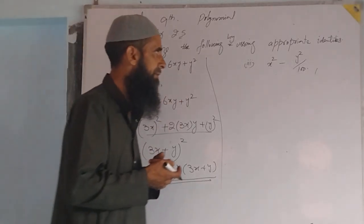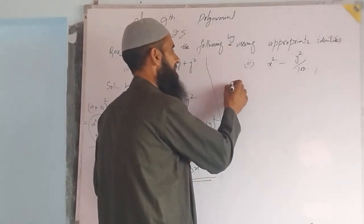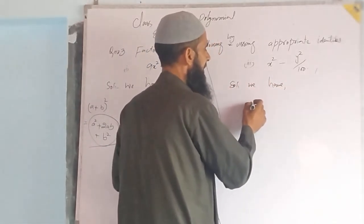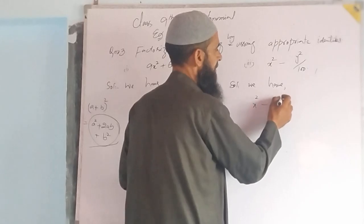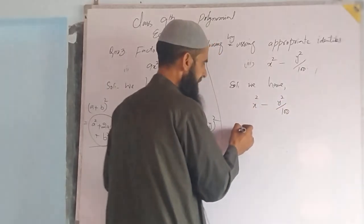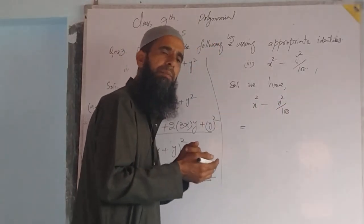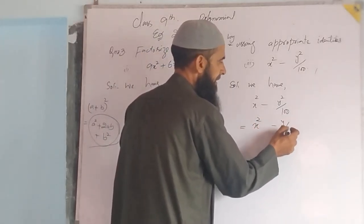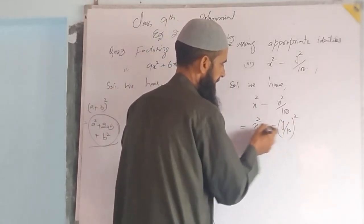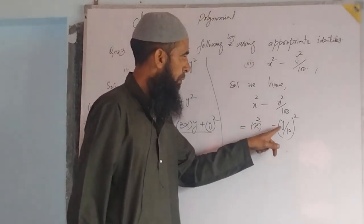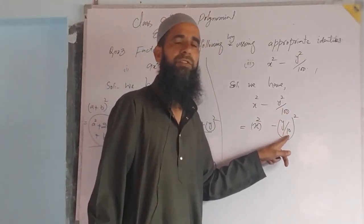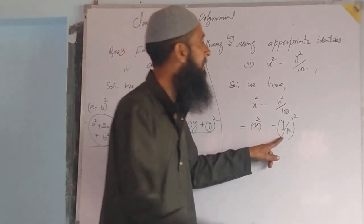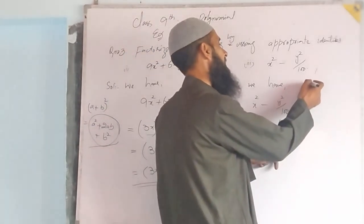These are the required factors of the algebraic expression obtained by using the appropriate identity. Now for the second part: we have x squared minus y squared by 100. This can be written as x squared minus (y by 10) whole square, since y divided by 10 whole square gives y squared over 100.